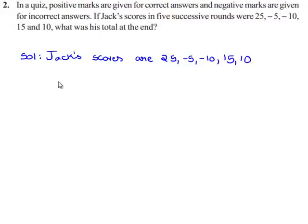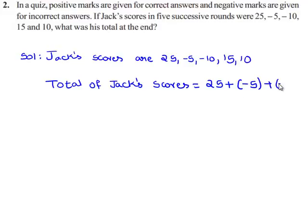We will find the total of Jack's scores. That is equal to 25, plus minus 5, plus minus 10, plus 15, plus 10.